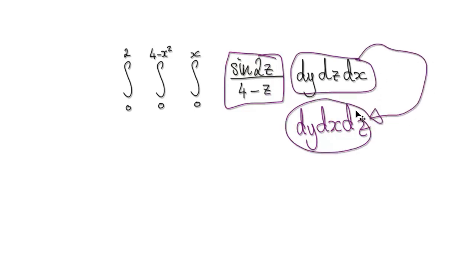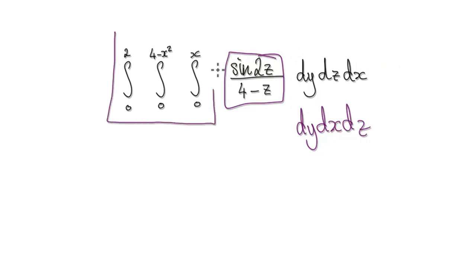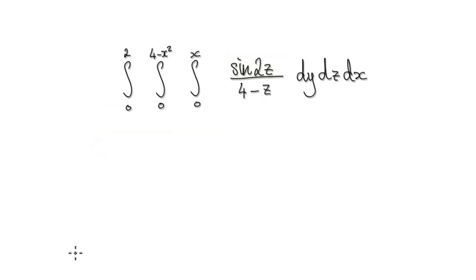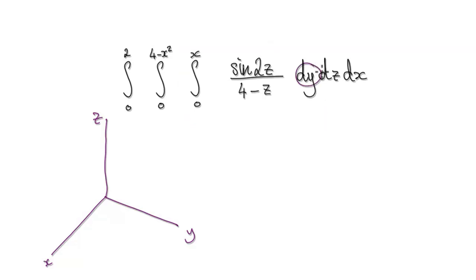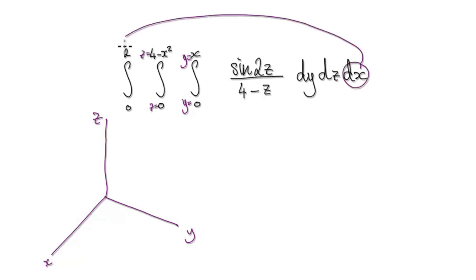In order to change the order, we need to understand the region we're integrating over. So the next step is to draw a diagram to see the region. Our region is in x, y, z 3D space. Looking at the inner integral, this is dy, so it's going to be y equals something and y equals something. Then z equals something, z equals something. And then the outer integral is x equals something, x equals something.